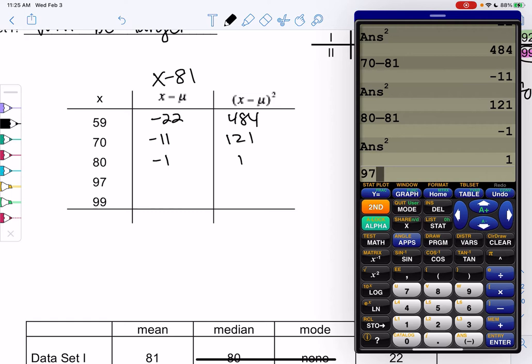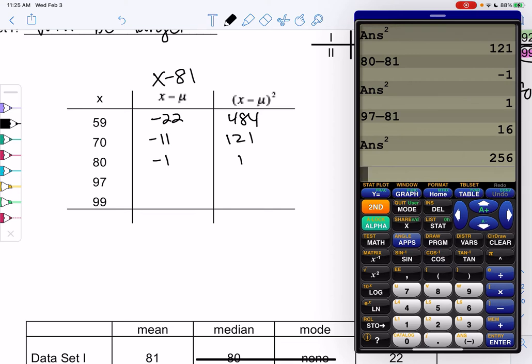97 minus 81, 16 squared is 256. And then finally, 99 minus 81, 18. When we square that, we get 324.